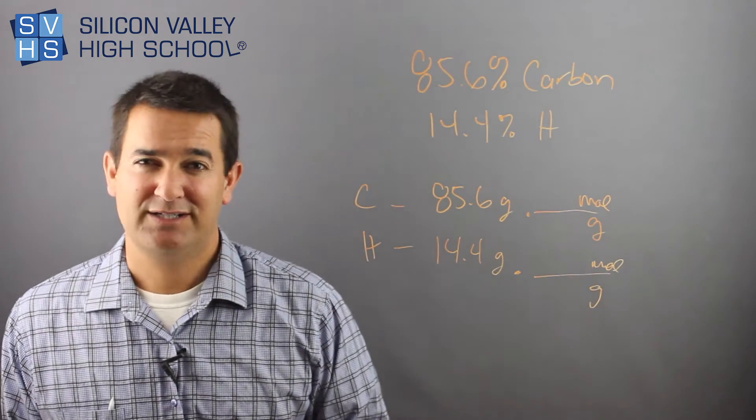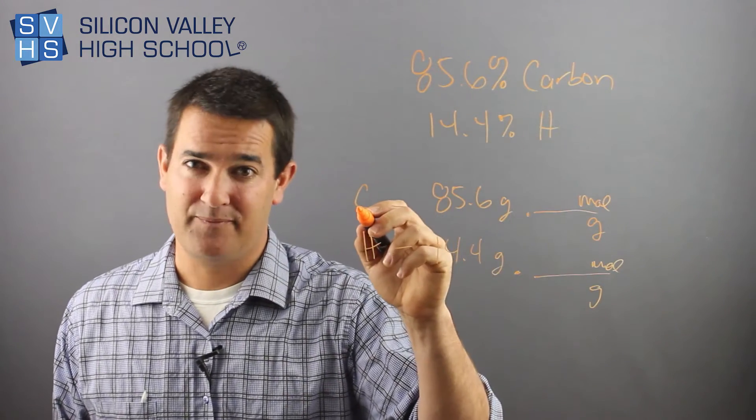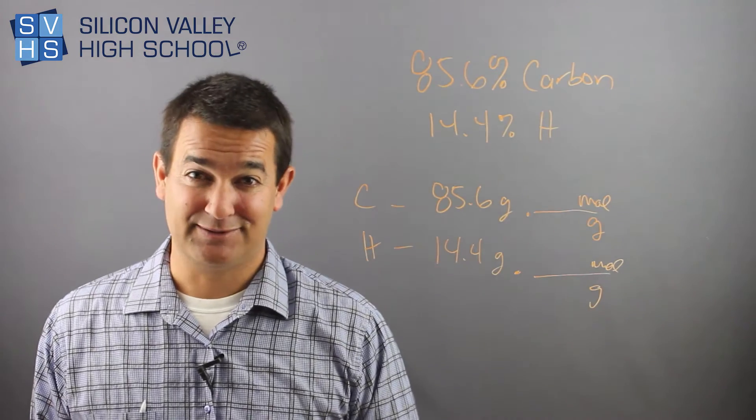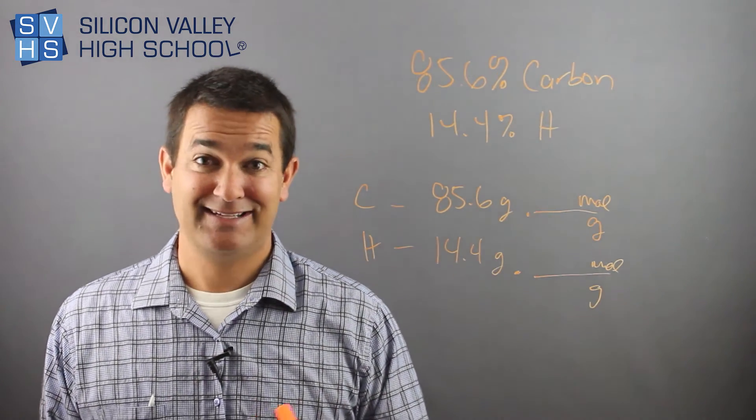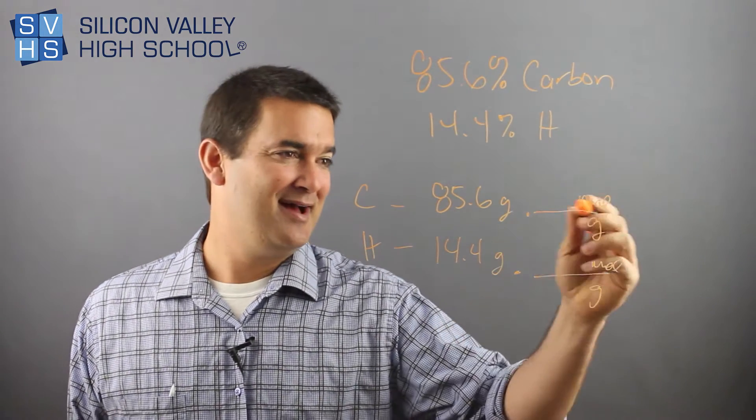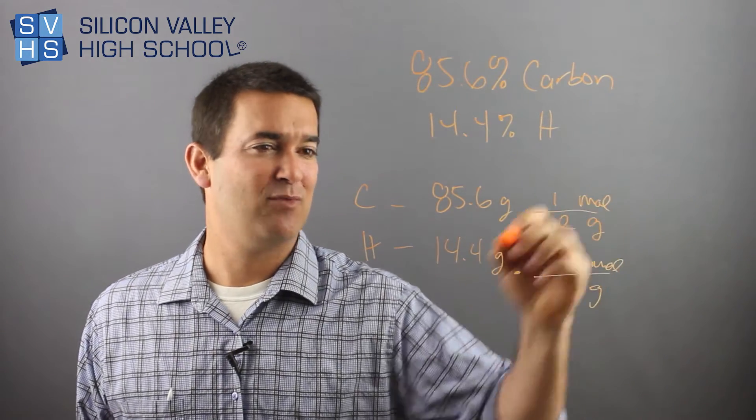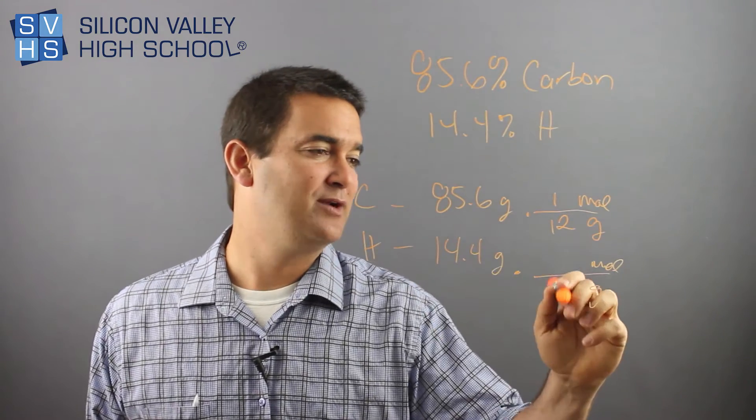Then the question is, where do you actually find grams per mole? How do you know grams per mole of carbon? How do you know grams per mole of hydrogen? And that has to do with the periodic table. It turns out that I'm a hyper nerd. I actually know that this is 12 grams per mole for carbon.